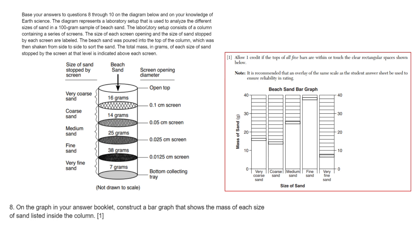The diagram represents a laboratory setup used to analyze different sizes of sand in a 100 gram sample of beet sand. The laboratory setup consists of a column containing a series of screens. The size of each screen opening and the size of sand stopped by each screen are labeled. The beet sand was poured on the top of the column, which was then shaken from side to side to sort the sand. The total mass in grams of each size of sand stopped by the screen at that level is indicated above each screen.